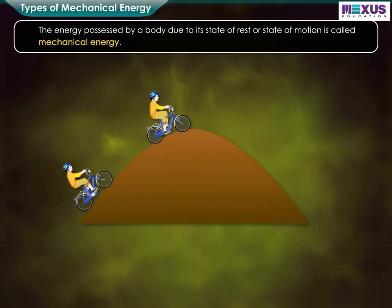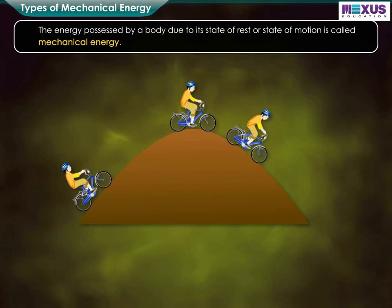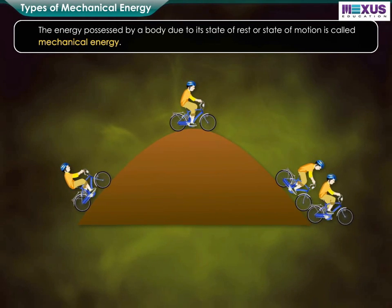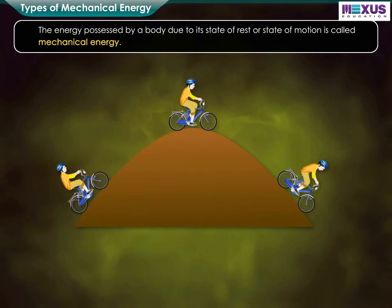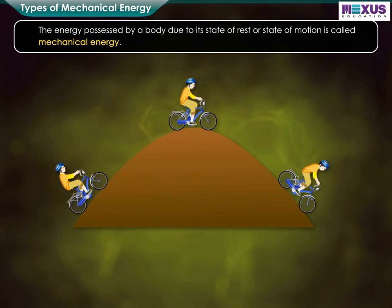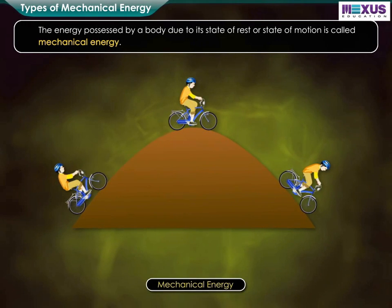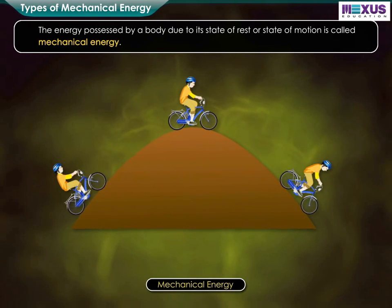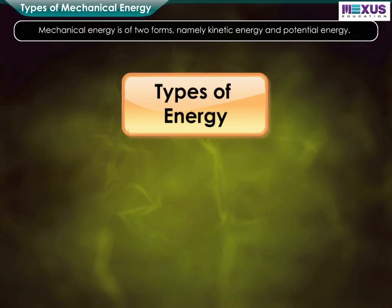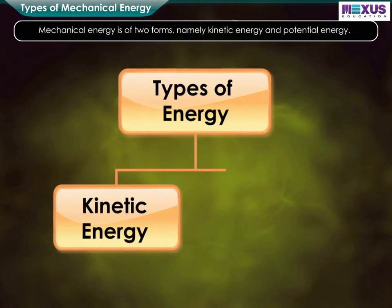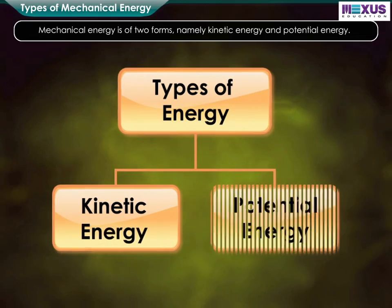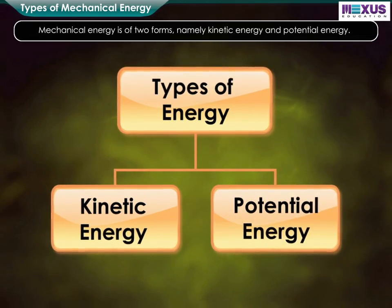The energy possessed by a body due to its state of rest or state of motion is called mechanical energy. Mechanical energy is of two forms, namely kinetic energy and potential energy.